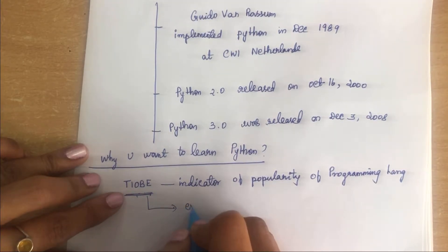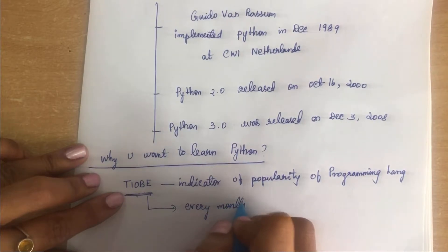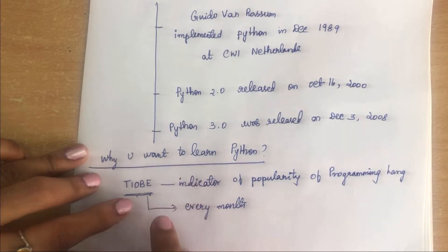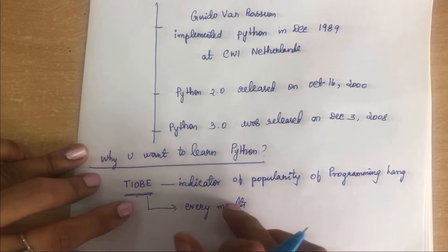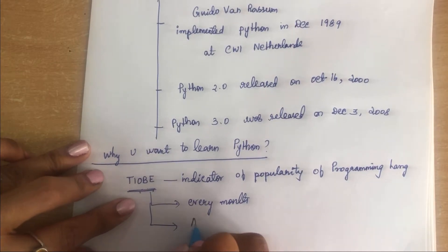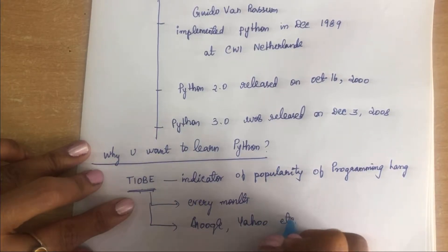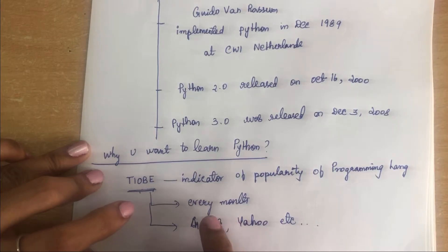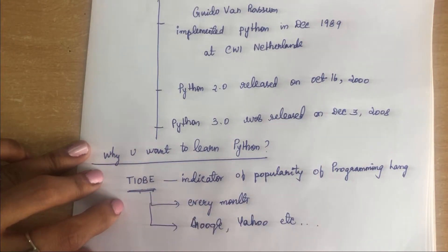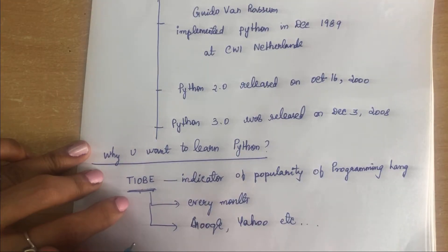The TIOBE index is updated every month. The ratings are based on the number of skilled engineers using the programming language and third-party vendors using the language. The ratings are also based on search engines like Google, Yahoo, etc. This index is not about the best programming language — it is about the programmers who are using it. That is why Python is one of the richest programming languages used worldwide.